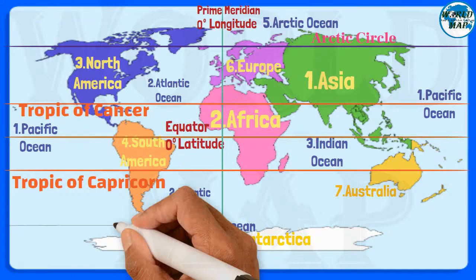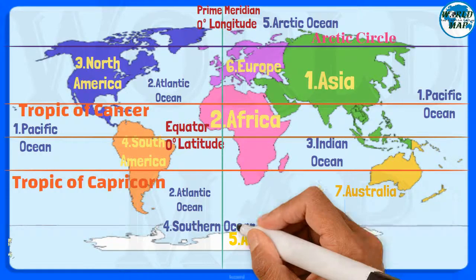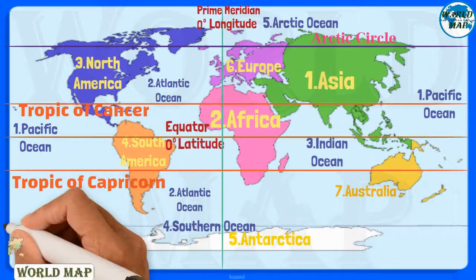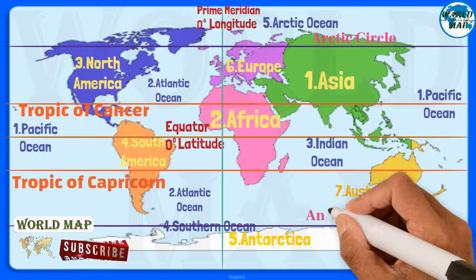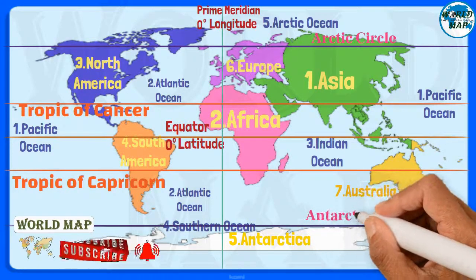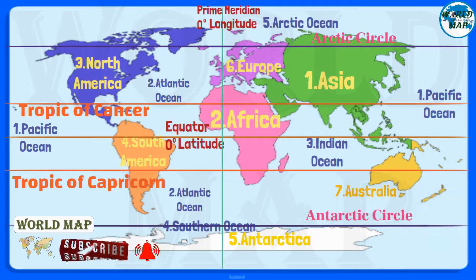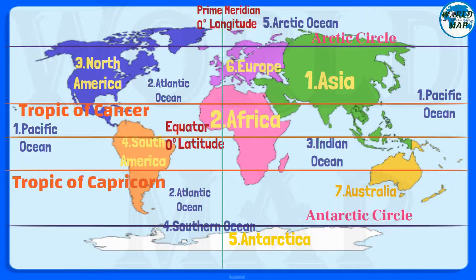The Antarctic Circle is the most southerly of the five major circles of latitude that mark maps of Earth. The region south of this circle is known as the Antarctic, and the zone immediately to the north is called the Southern Temperate Zone.